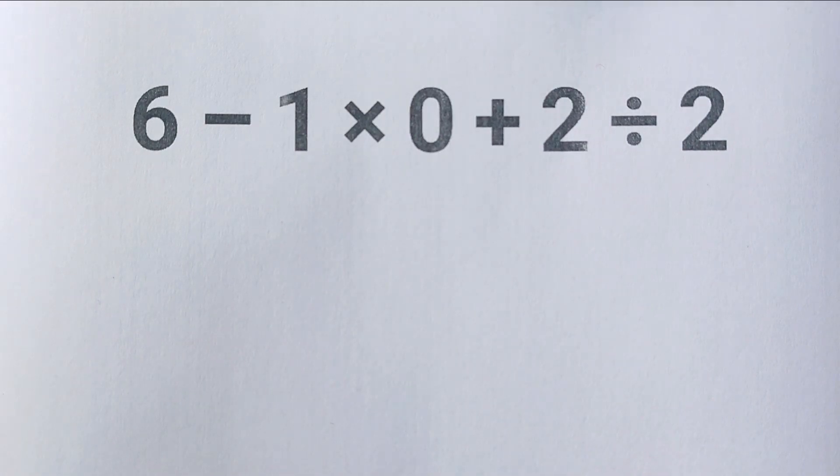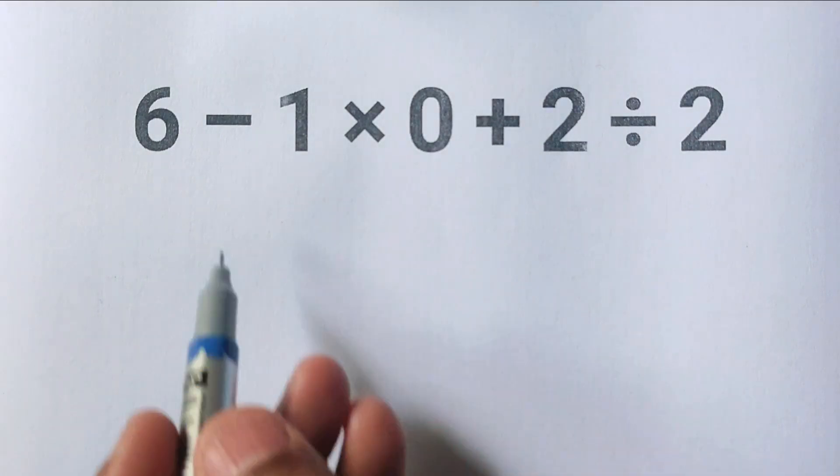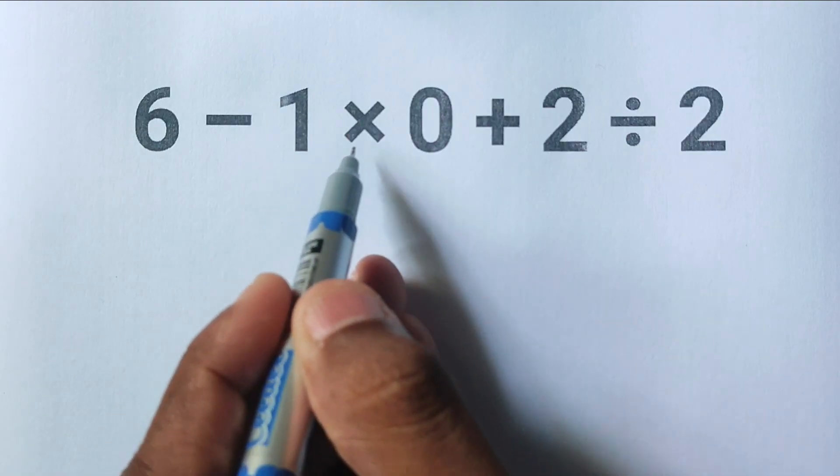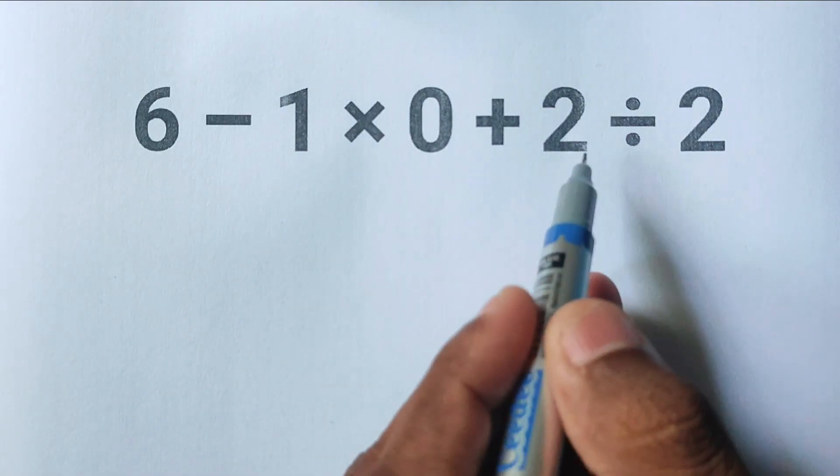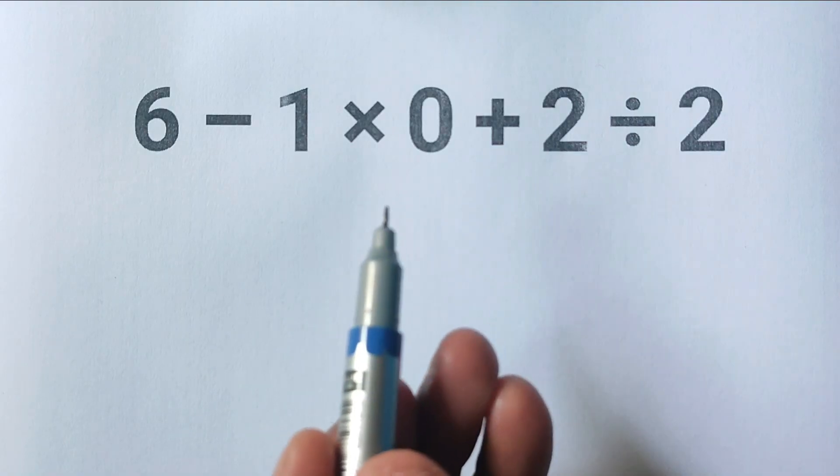Hey friends, today I have another simple math problem for you. The question is: 6 minus 1 times 0 plus 2 divided by 2. If you think you know the answer, go ahead and drop it in the comments below.